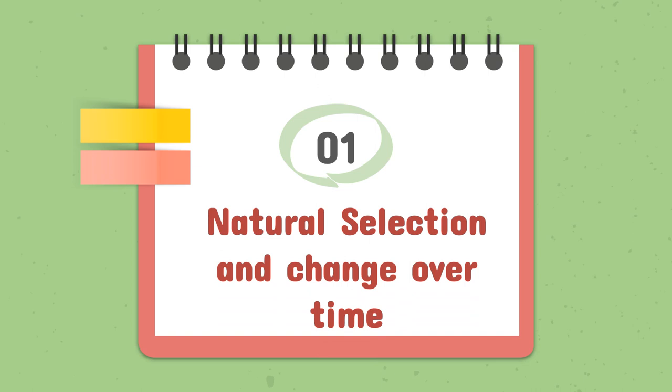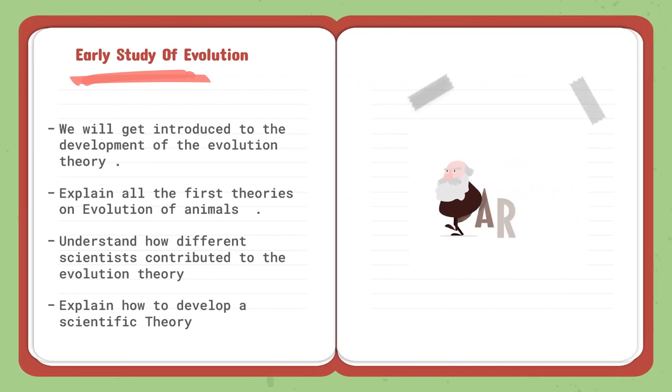Let's start with the topic of natural selection and change over time. Lesson is early study of evolution. So we are going to get introduced to the development of the evolution theory. So how did that start? Where did that theory start? So the first theories started by landmark idea and linear classification system. Moving on to Charlie's rock and Mary Anning's fossils that was discovered. These were the key findings that contributed to the theory of evolution by Charles Darwin. So Charles Darwin contributed to the evolution theory by taking parts of the theories that were made by previous scientists.